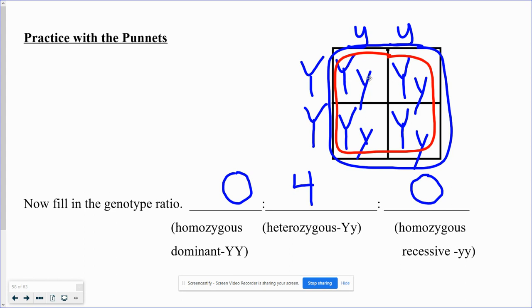So our genotype ratio is zero homozygous dominant, four heterozygous, and zero homozygous recessive.